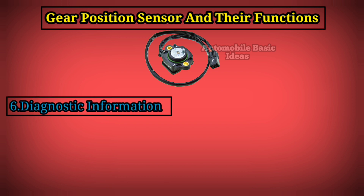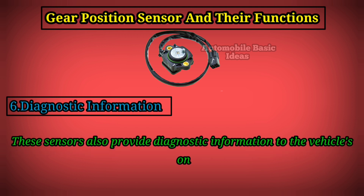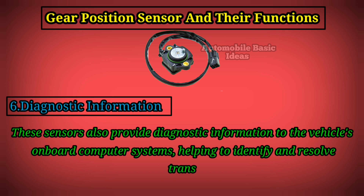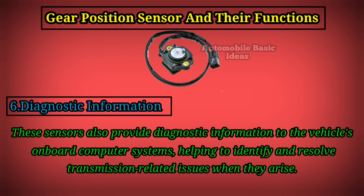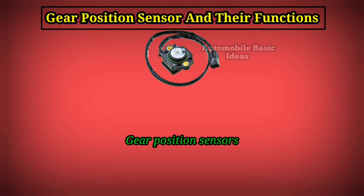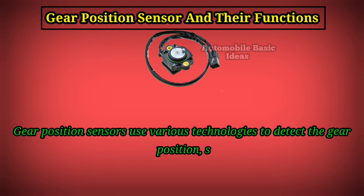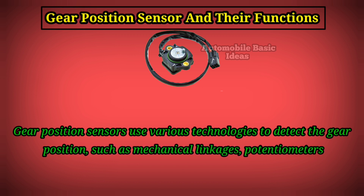Six: diagnostic information. These sensors also provide diagnostic information to the vehicle's onboard computer systems, helping to identify and resolve transmission-related issues when they arise. Gear position sensors use various technologies to detect the gear position, such as mechanical linkages, potentiometers, Hall effect sensors, or other electromagnetic sensors.